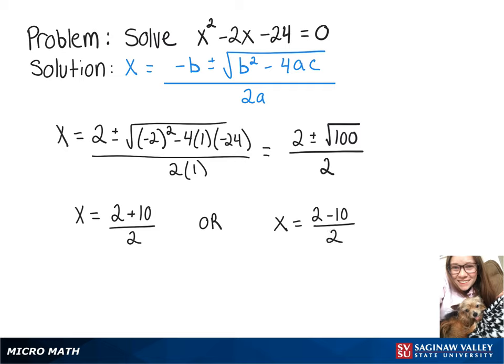So 2 plus 10 is 12 divided by 2 gives us one answer, x equals 6. Or 2 minus 10 gives us negative 8 divided by 2 is negative 4.